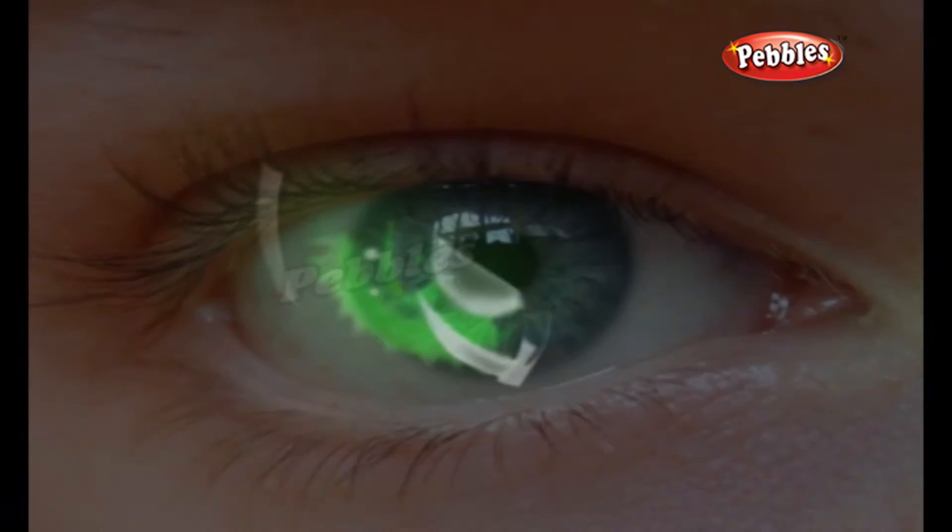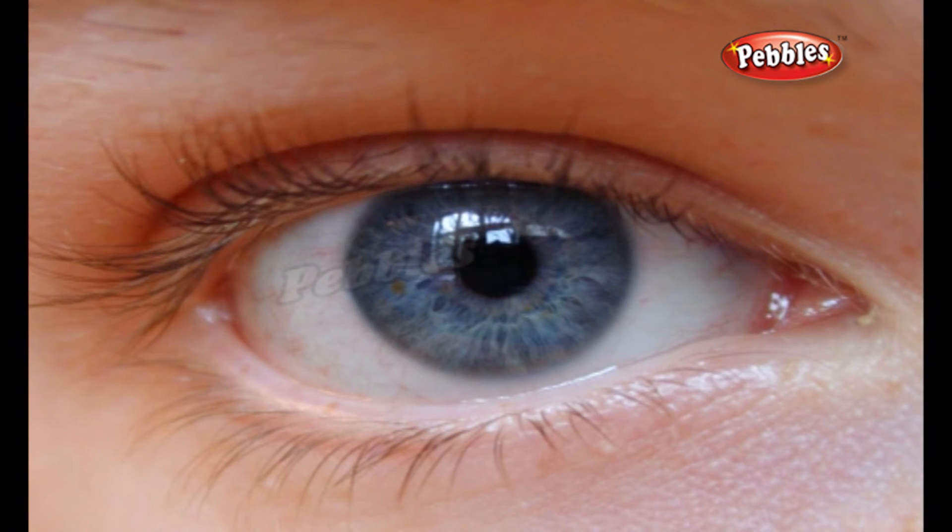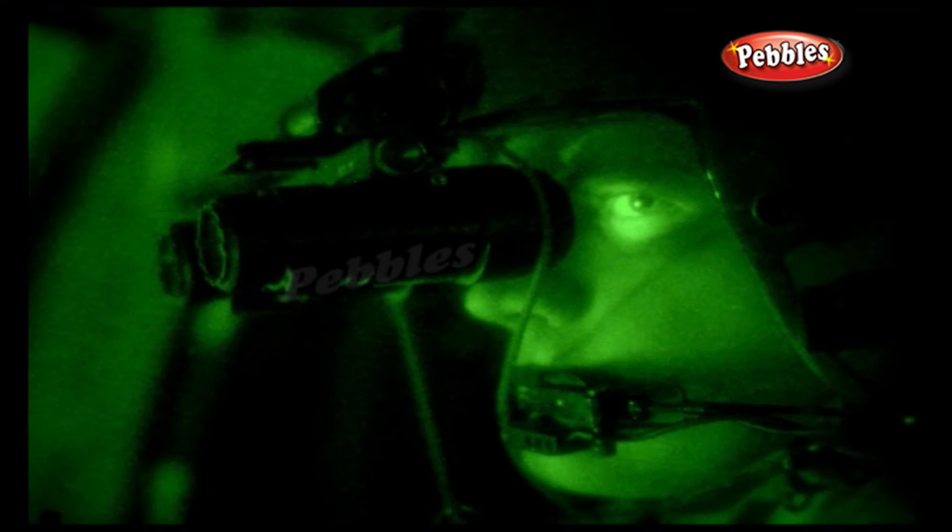That's why cats are so good at seeing in the dark. Humans can't use any of these tricks because we don't have a tapetum. So what can we do to see at night? We can reach for technology.